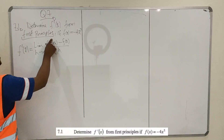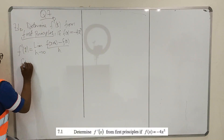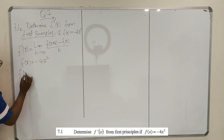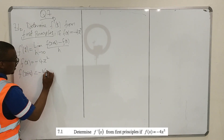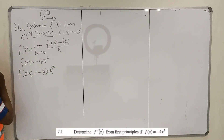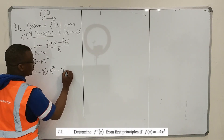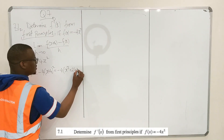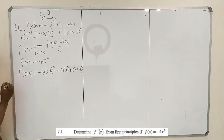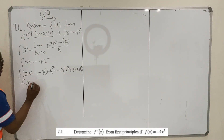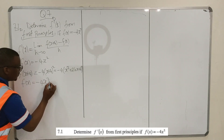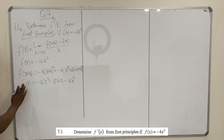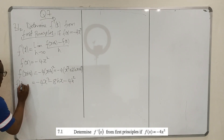But first I need to find f of x plus h. I'm given that f of x is equal to minus 4x squared. So f of x plus h is going to be equal to minus 4 into x plus h, all squared. Which expands to minus 4 into x squared plus 2hx plus h squared. So f of x plus h equals minus 4x squared minus 8hx minus 4h squared.